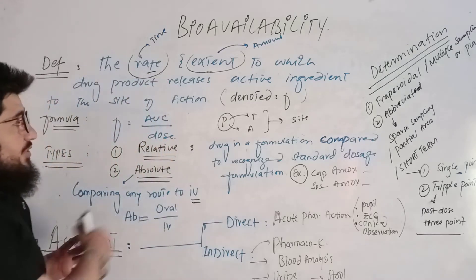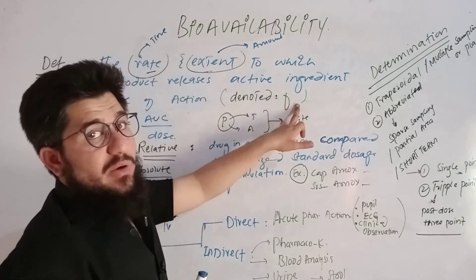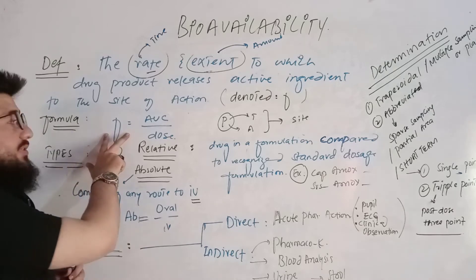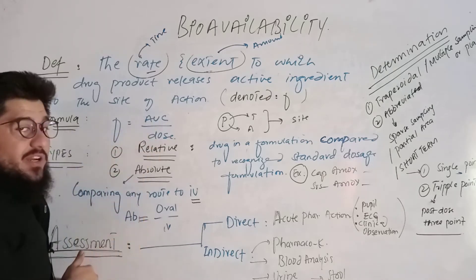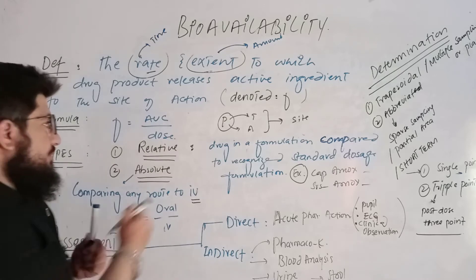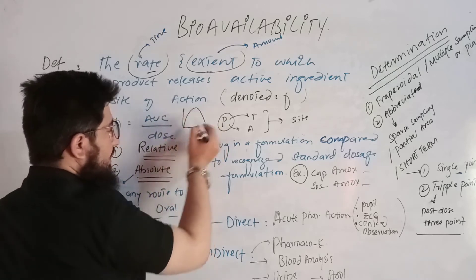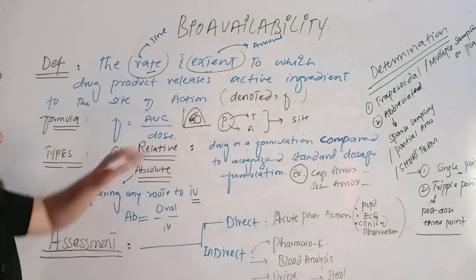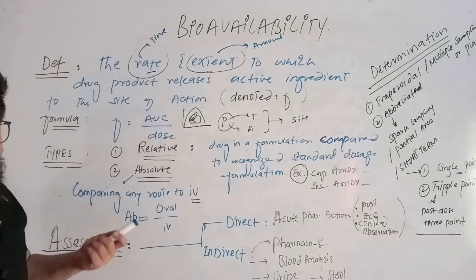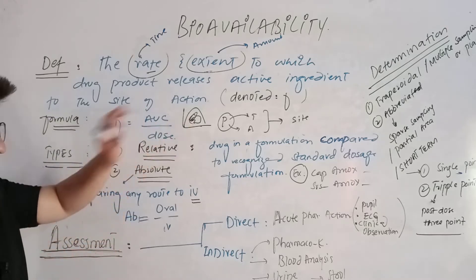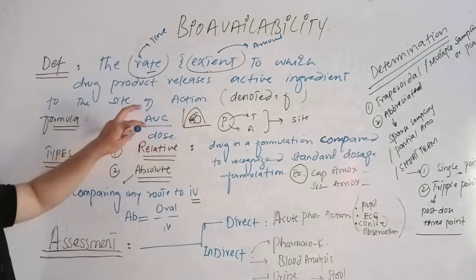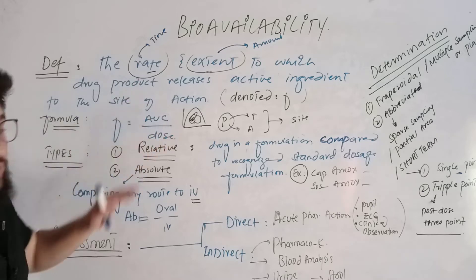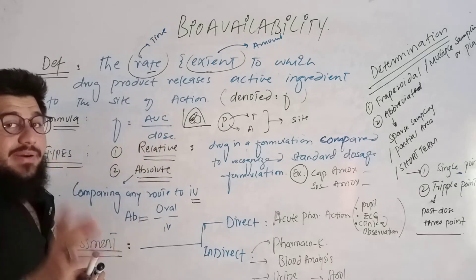We represent bioavailability by the symbol F. The formula is: F equals AUC divided by dose, where AUC stands for area under the curve. The area under the curve is this portion beneath the curve. So F equals AUC divided by dose — this formula can be used to calculate bioavailability.